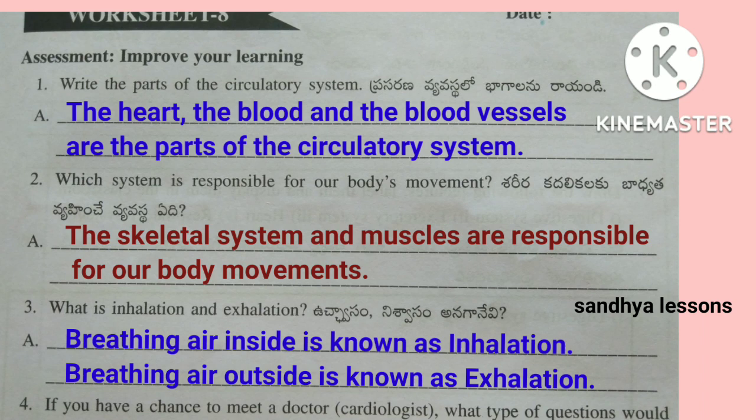The heart, the blood, and the blood vessels are the parts of the circulatory system. Second question: Which system is responsible for our body's movement? The skeletal system and muscles are responsible for our body's movement. Third question: What is inhalation and exhalation? Breathing air inside is known as inhalation; breathing air outside is known as exhalation.